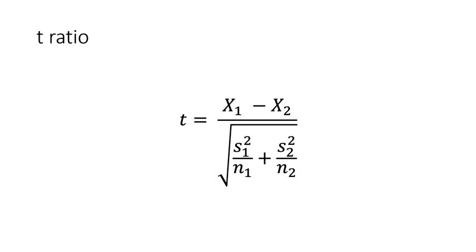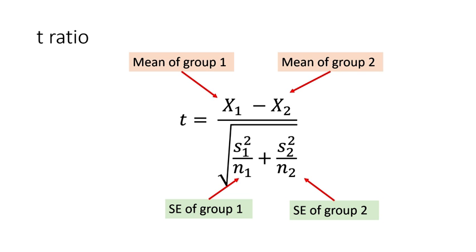An equation for the t-ratio which produces the t-statistic looks like this. The numerator shows the means of group one and group two on some measure. Maybe it's a teacher-made post-test. These means are subtracted. The denominator shows the standard error of group one and two, which are added, and then take the square root of this value.